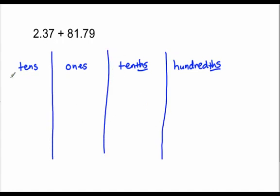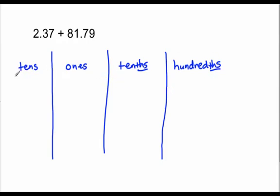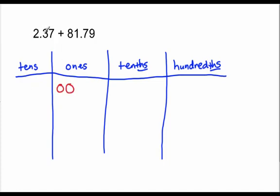Now let's model this. I'm going to model two ones, three tenths, and seven hundredths. Whenever I make a model, I always try to make strings of five so it's easier to count. So this is five and two, which is seven hundredths.